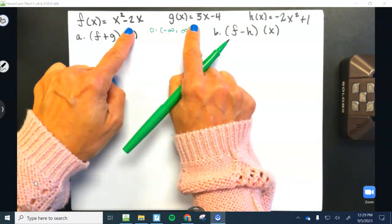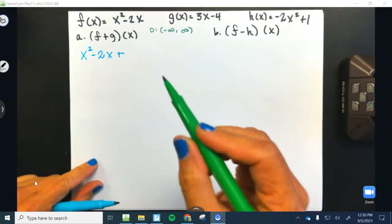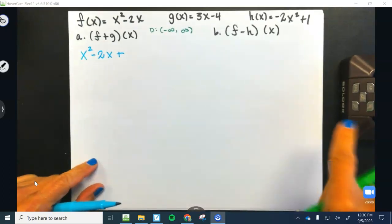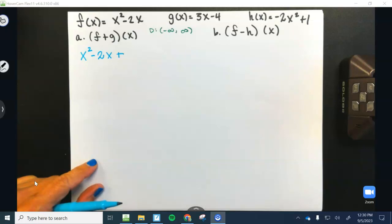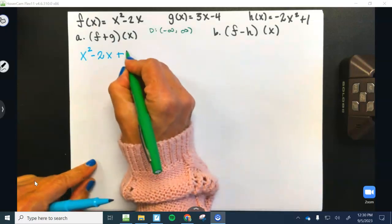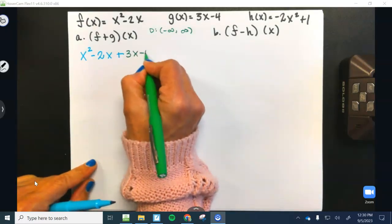So we're going to add functions f and g. So all we're going to do is write f, which is x squared minus 2x, plus g, which is 3x minus 4. Oh, I'm sorry. Thank you. Yeah, good job, y'all. You let me know any time there's anything weird going on there. All right, 3x minus 4.